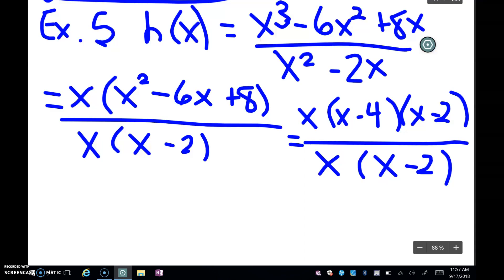Now, once everything's factored, you can see that I can cancel some stuff out. So I'm going to cancel the x's out and the (x - 2)'s out. So that simplifies my function to be just x - 4, which is something I can do a derivative of using that sum and difference rule.